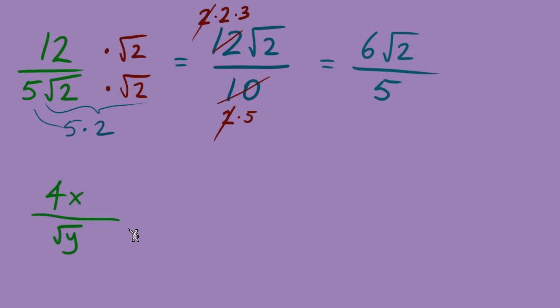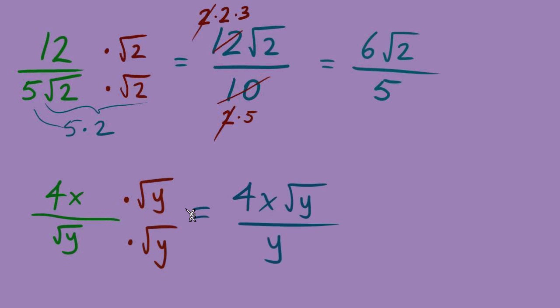The second problem has variables, but the steps are exactly the same. There's nothing to simplify in the fraction, and radical y can't be simplified either, so we rationalize — multiply by radical y over radical y. In the numerator, 4x stays outside and y stays inside the radical, giving 4x radical y. In the denominator, radical y times radical y gives y outside, making the denominator 3y. Finally, check for canceling — the y inside the radical and the y outside are not available to cancel each other, so this problem is finished.